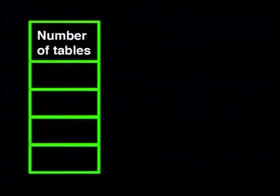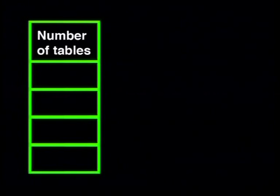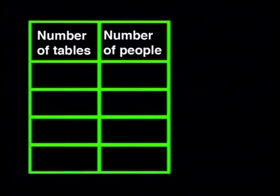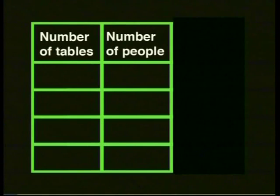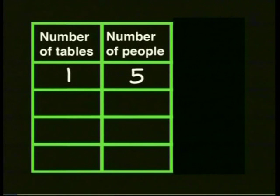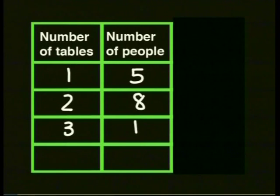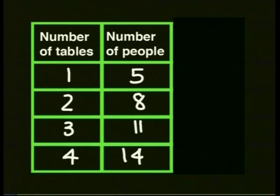Let's make a column for the number of tables and a column for the number of people. Now what information can we put into the table so far? We know that five people can sit around one table. For two tables, we had eight people. For three tables, we had eleven people. And for four tables, we can fit fourteen people around it.